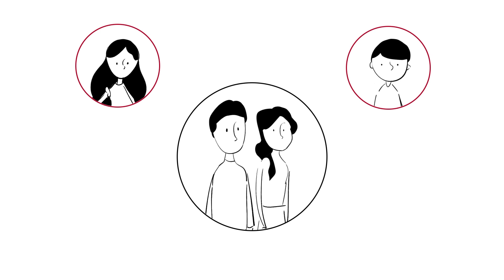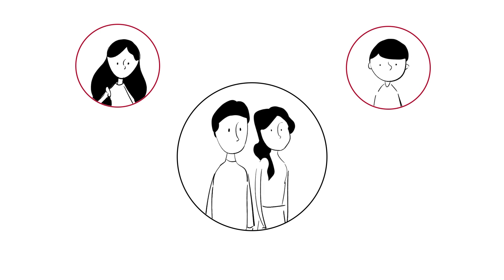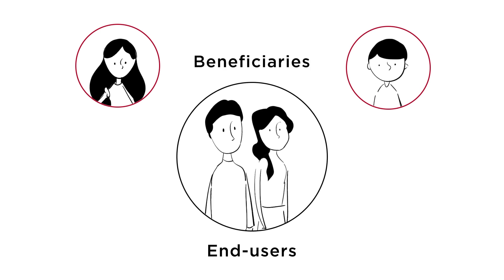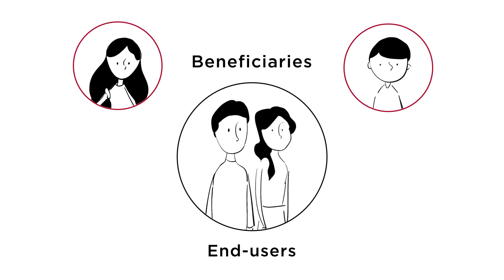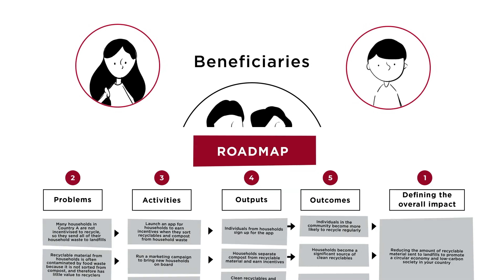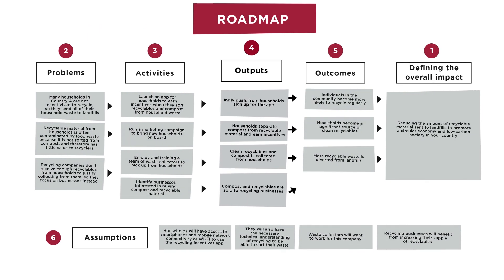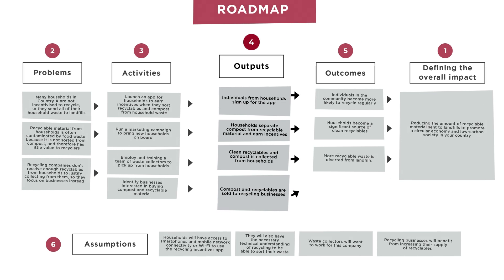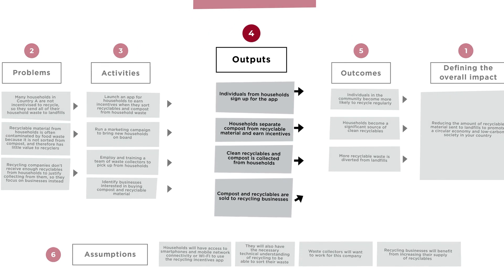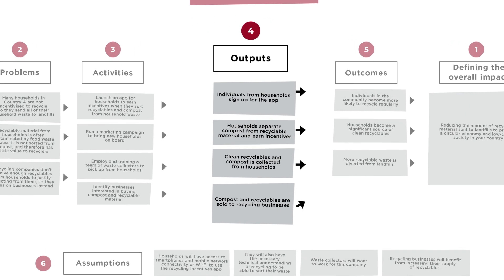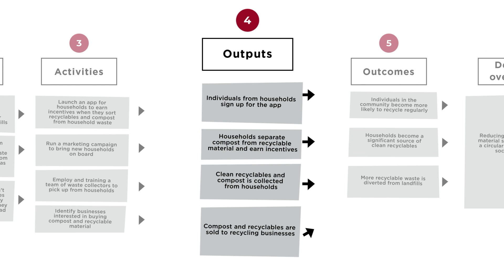To start using your roadmap to determine KPIs and milestones, it's important to first identify your end-users and beneficiaries. Look back at your roadmap and ensure that it clearly identifies your end-users — those who are directly using your product. End-users are evident in your outputs. In the recycled waste example, end-users are the individuals using the app. Circle the end-users and note down who they are.